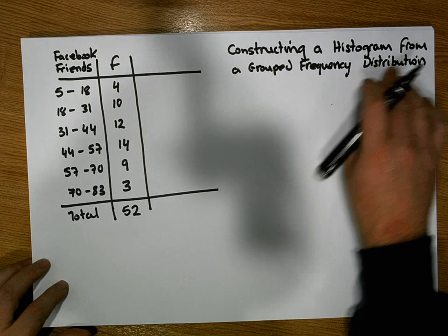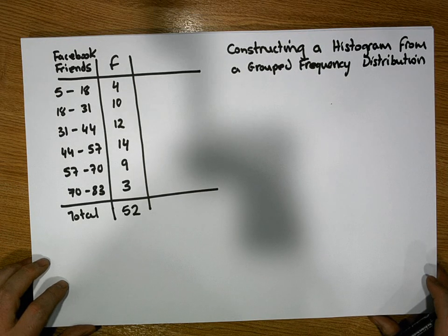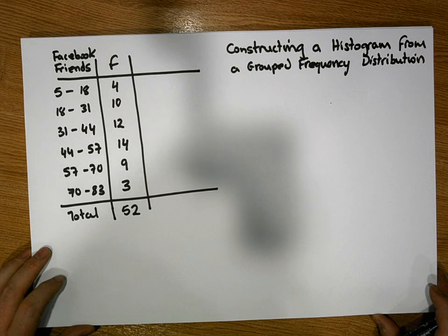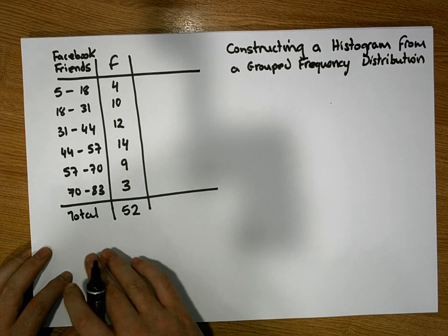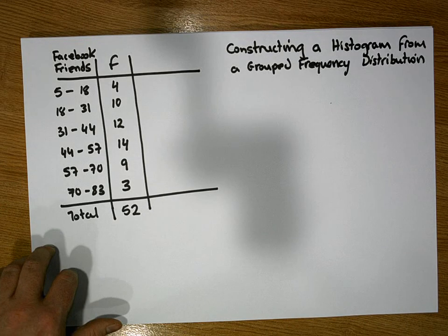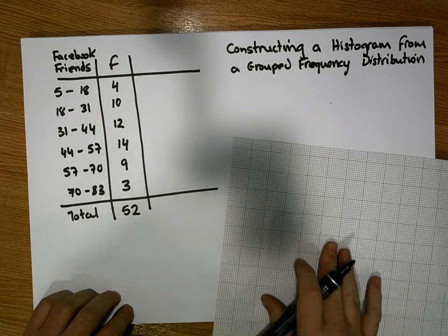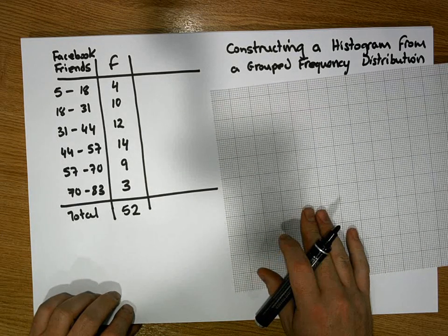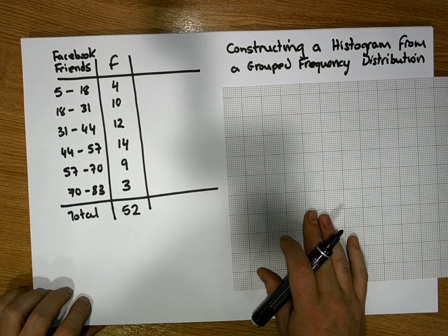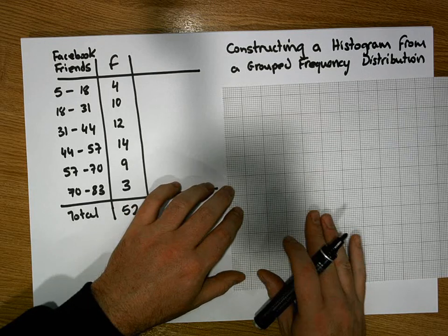But to construct a histogram from a grouped frequency distribution is pretty straightforward. Let me just grab some graph paper. So to construct it, we will always try to construct it on graph paper. A histogram is basically a chart.